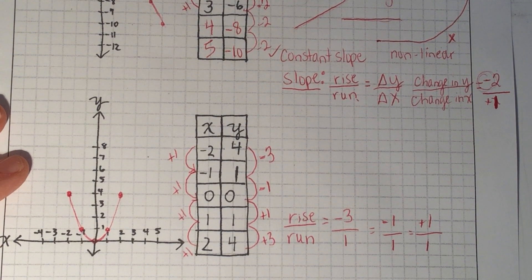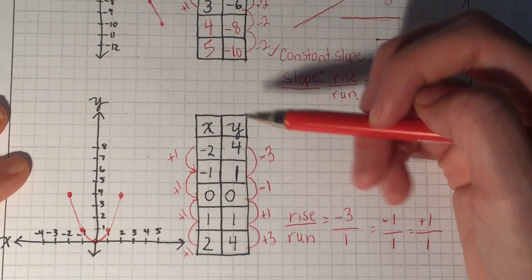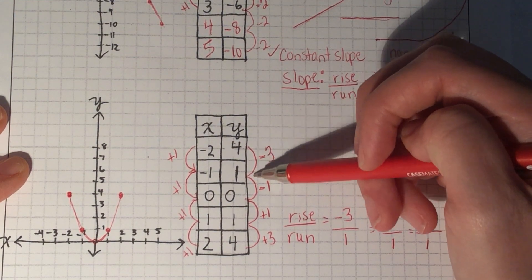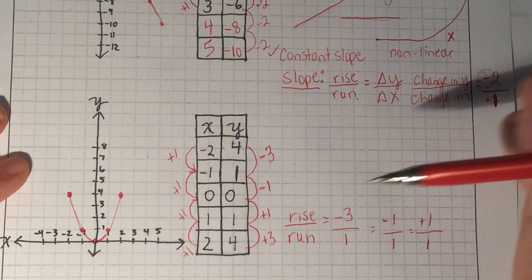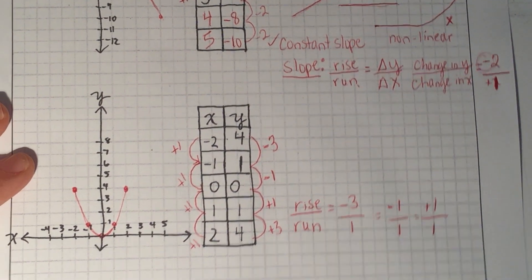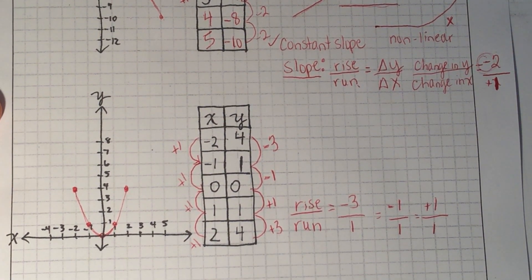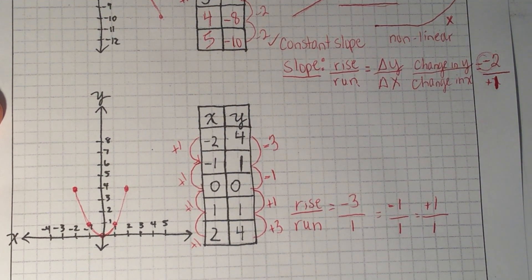So that's a shortcut: if you don't want to draw an entire graph and see if it's straight, you can just look and see if there's a constant pattern in the x and y change values in your table. I hope this video helps you identify what is a linear relation, either by looking at a graph or by looking at a table of values.